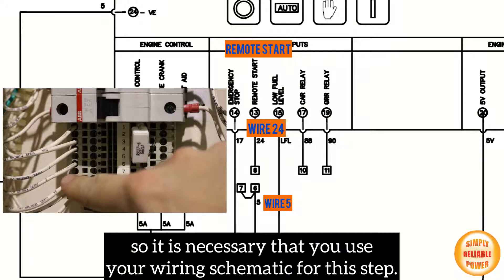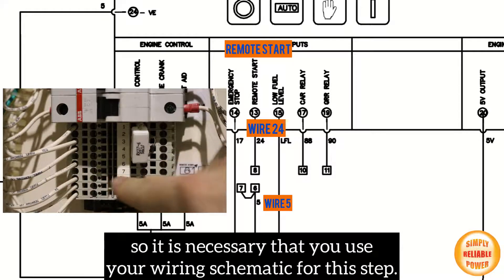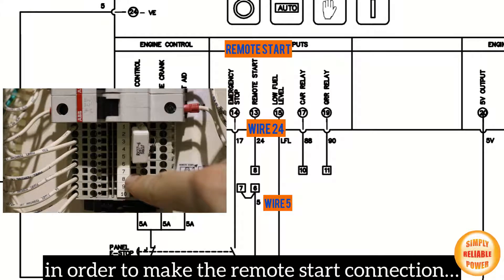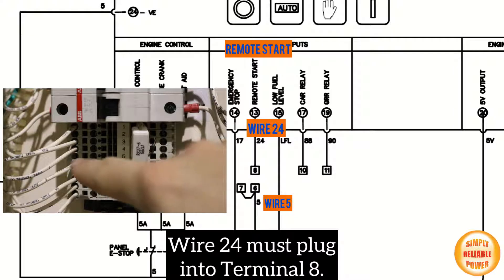It is necessary that you use your wiring schematic for this step. As we can see from this example, in order to make the remote start connection, wire 24 must plug into terminal 8.